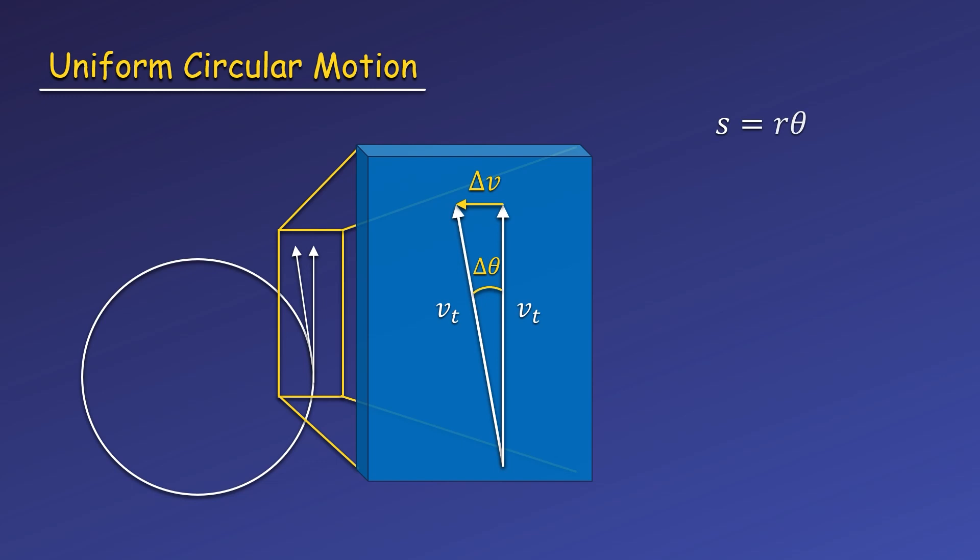The slice of our circle we looked at when we related the arc length, radius, and angle will begin to look more and more like the thin right triangle that we have here. So we'll use that relationship. In this case, Δv is our arc length, and tangential speed plays the role of the radius. This gives us the change in velocity is equal to the tangential speed times the small angular displacement.